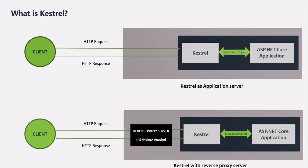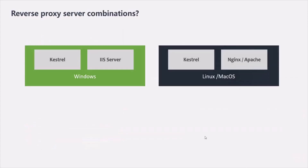A reverse proxy provides features like load balancing, URL rewriting, and port sharing, while the request itself is still passed to and processed by Kestrel. The reverse proxy server can be IIS, Nginx, or Apache. Popular combinations are Kestrel with IIS for Windows, or Kestrel with Nginx or Apache for Linux and Mac OS. In these combinations, IIS, Nginx, and Apache act as the reverse proxy, passing requests on to Kestrel.